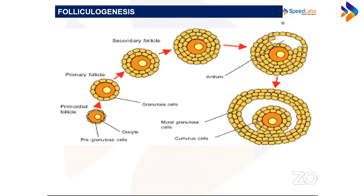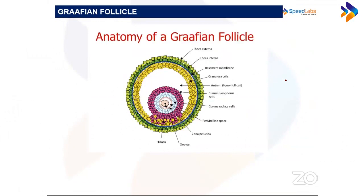Another slide shows the same follicle stages: primordial, primary, secondary follicle, with the granulosa cells dividing throughout. The fluid-filled cavity — the antrum — develops and is labeled clearly. The cumulus oophorus cells are a mass of cells that connect the corona radiata to the granulosa cells.